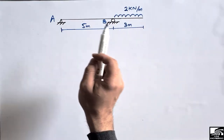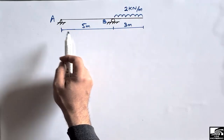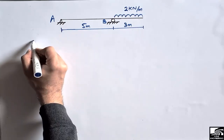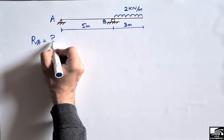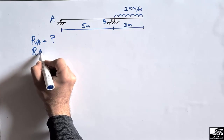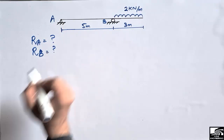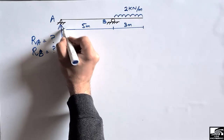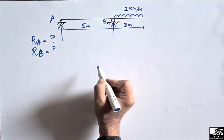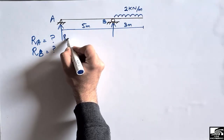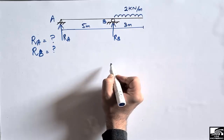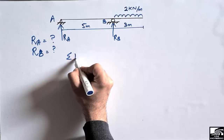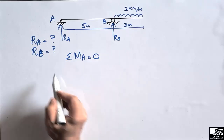The total length of the beam is 8 meters, while only 3 meters of the beam has been loaded with the uniformly distributed load. To draw the shear force and bending moment diagram, we first have to find the support reactions — the reaction at A (RA) and at B (RB). We assume these support reactions are acting in the upward direction.